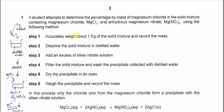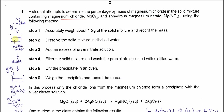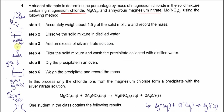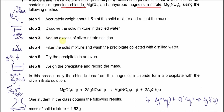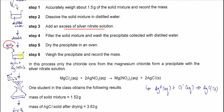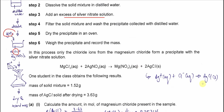This question starts with a solid mixture consisting of magnesium chloride and magnesium nitrate. 1.5 grams of the mixture was taken and dissolved in distilled water. Once dissolved, excess silver nitrate solution was added. The chloride ions in the solution will form a precipitate with the silver ions — a white precipitate.